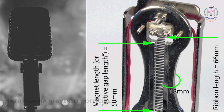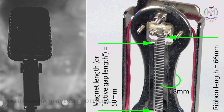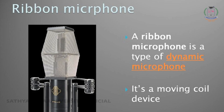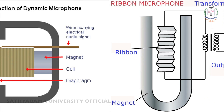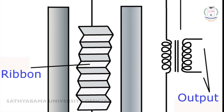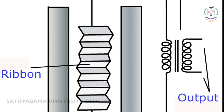The next one is ribbon microphone. A ribbon microphone has a light metal — aluminum — or a ribbon suspended between the poles of a magnet. The voltage output of ribbon microphones is typically quite low compared to dynamic moving coil microphones, and a step-up transformer is used to increase the voltage output and output impedance.